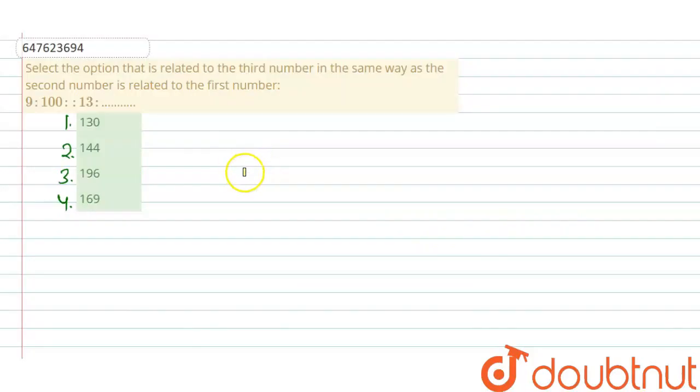Hi guys, we have a question here. Select the option that is related to the third number in the same way as the second number is related to the first one. So we have three numbers here: 9, 100, 13 and the number we have to find. And we have four options for it: 130, 144, 196 and 169.